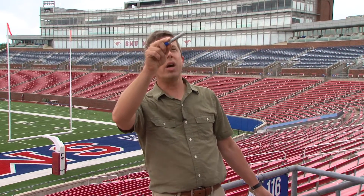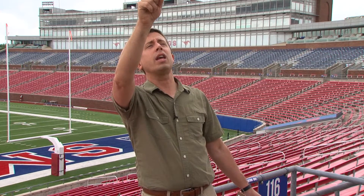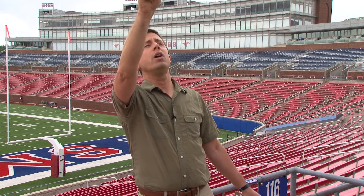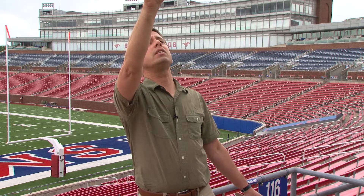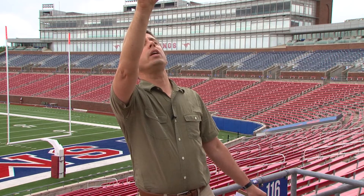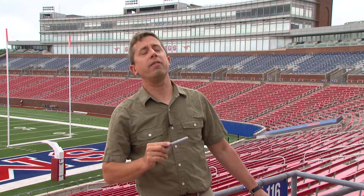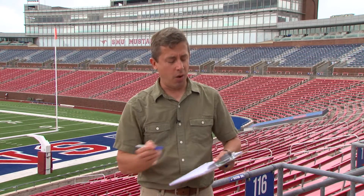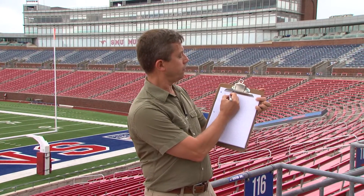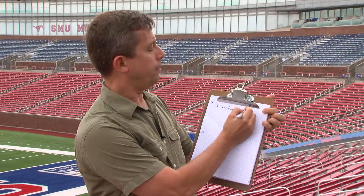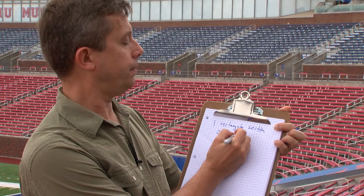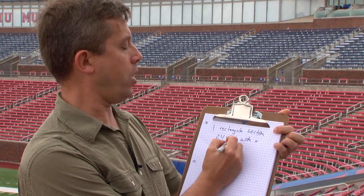Now I've got to count the rows above me: 1, 2, 3... all the way up to 25. So I'm looking at 49 rows total, with 24 seats across. My counts might not have been exact — it's tricky to count all those rows from one spot — but hopefully we're getting close. So one rectangular section is 24 seats wide by 49 rows deep.